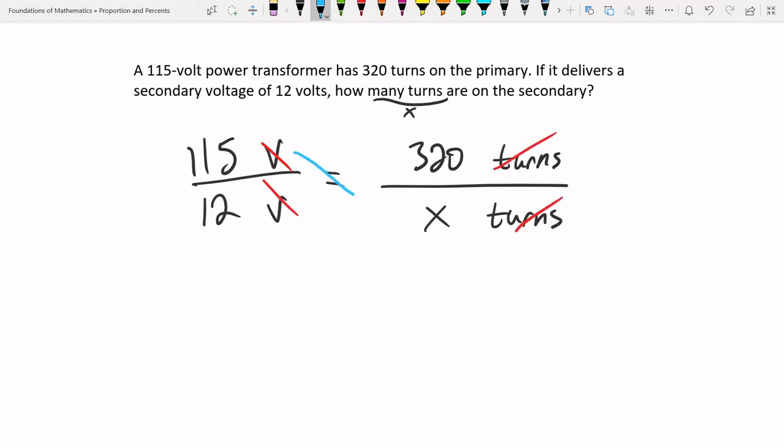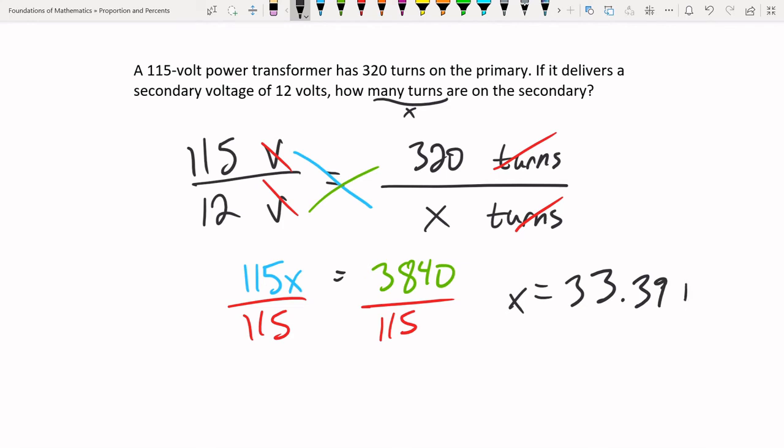The way we set it up, all the units cancel. Cross multiply. 115 X equals 12 times 320 is 3,840. And divide. And we see we get X equals 33.39. And this is going to be in turns.